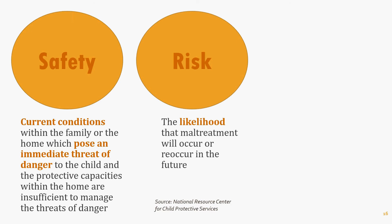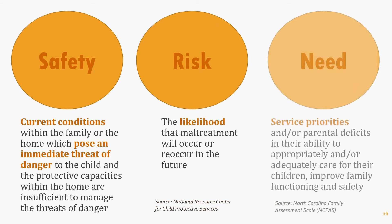Safety in child welfare is very much about whether the child needs immediate placement in protective custody or whether there is enough support in the family and home to prevent that placement. Compared to the immediate emergency response of safety, risk in this context refers to the likelihood that maltreatment will occur or reoccur in the future. These definitions come from the National Resource Center for Child Protective Services, which has helped child welfare understand these components and put assessment tools in place that differentiate predictors of safety from predictors of risk.